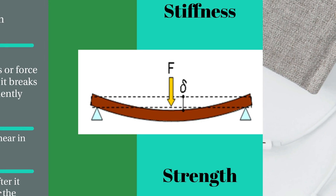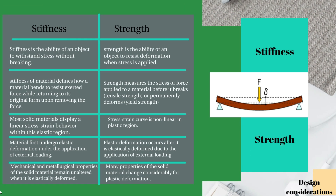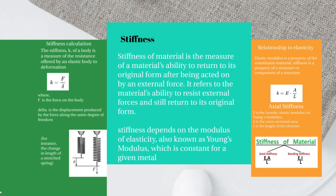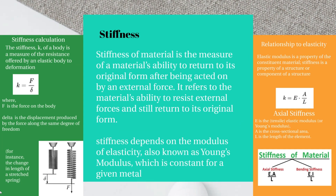Stiffness is the measure of a material's ability to return to its original form after being acted on by an external load. It refers to the material's ability to resist external forces and still return to its original form.